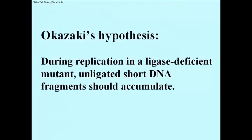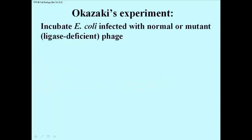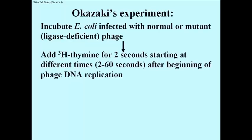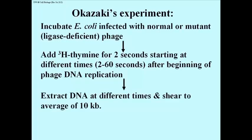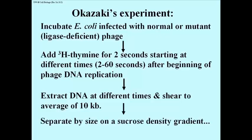So Okazaki did experiments to test his hypothesis. He predicted that during an infection by ligase-deficient T4 phage, replication of new phage DNA would result in the accumulation of short DNA fragments that would not be efficiently stitched together. He incubated ligase-deficient T4 phage with E. coli cells, then added radioactive tritiated thymine to the infected cells at 2–5 second intervals after infection. In each case, a few seconds after adding the radioactive nucleotide, he extracted total DNA from the infected cells and used physical methods to shear the DNA down to an average of about 10,000 base pairs in length. Finally, he put the sheared DNA isolates through sucrose density gradient centrifugation to separate DNA fragments by size — in other words, by length.